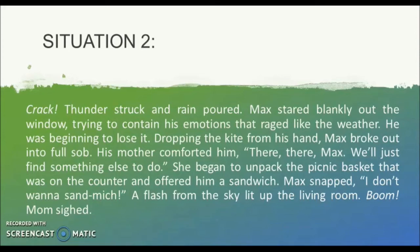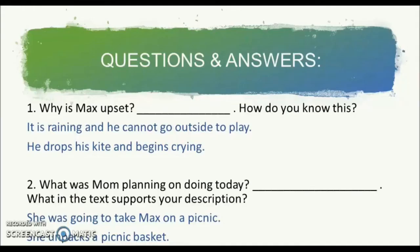Max snapped, 'I don't want a sandwich.' A flash from the sky lit up the living room. Boom! Mum sighed. Okay, let us look at the questions and answers. Why is Max upset? From the situation, you can infer that Max is upset due to the rain and he cannot go outside to play. How do you know this? He drops his kite and begins crying. Question number two: What was mum planning on doing today? You can infer that she was going to take Max on a picnic. What in the text supports your description? She unpacks a picnic basket.